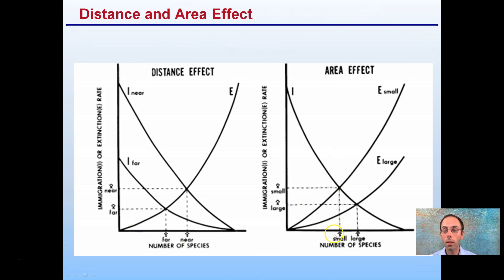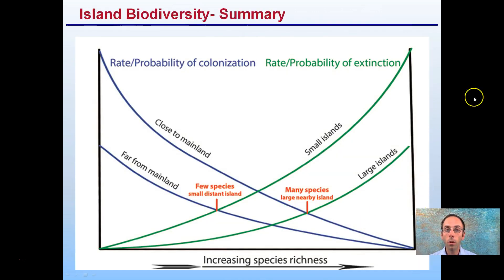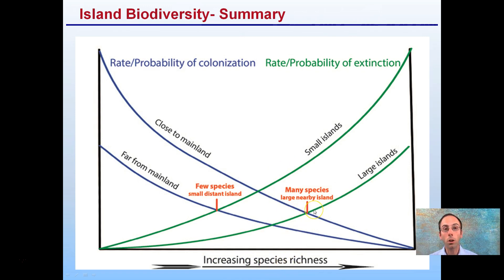Looking at this summary graph, the take-home message is: a small, distant island will have fewer species. A large, nearby island — close to the mainland — will have many species. This illustrates increasing species richness: large islands close to mainlands will have a greater number of species than small islands that are very distant from the mainland.